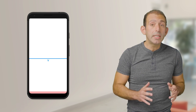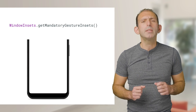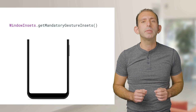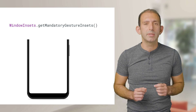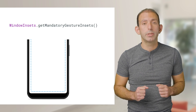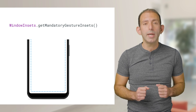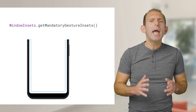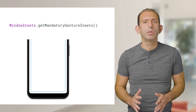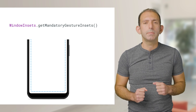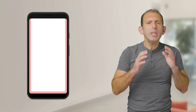To steer clear of the bottom swipe conflict, we added window insets that get mandatory system gesture insets, which returns all swipe recognition thresholds for the device. Using this information, apps can shift conflicting content away from the edges of the screen.